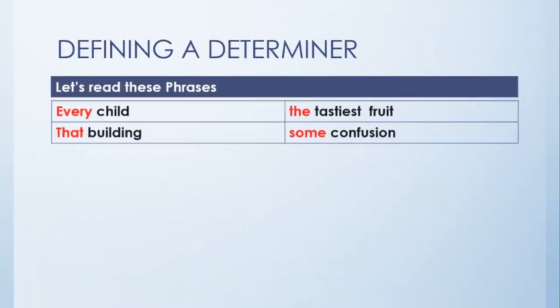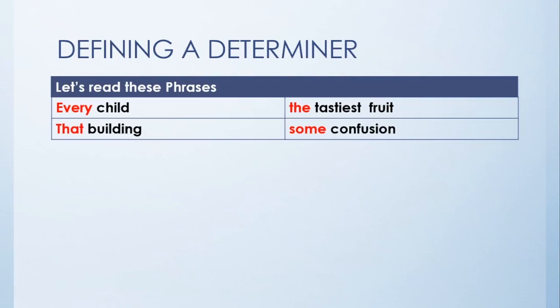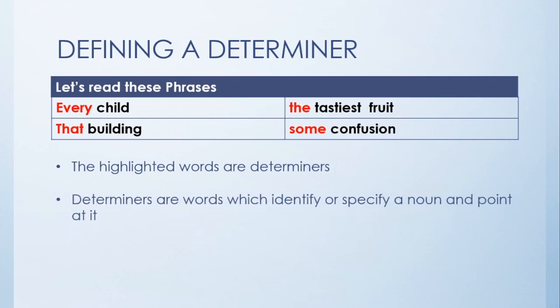Let's start by reading these phrases: every child, the tastiest fruit, that building, some confusion. The highlighted words are determiners. Why? Because they are telling us something about the nouns: child, fruit, building, and confusion.